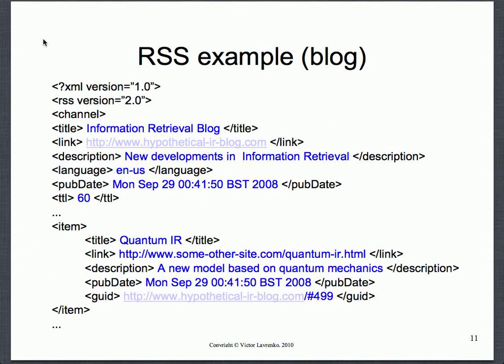Here's an example of a blog aggregation. That's what a blog feed would look like. You have a title, the URL you'll be checking, and a list of items. Each item has a publication date and sometimes a unique ID, so you can check whether you've processed that entry already — if you have, you ignore it; if not, you fetch it from the link. And there's the TTL field: if the publication date is 00:41:50 on September 29th, 2008, then this list will not change for the next 60 minutes from that point, so you don't have to check it again.